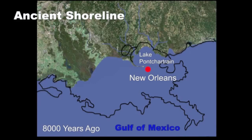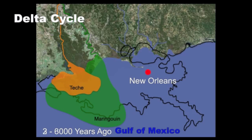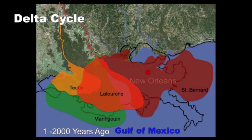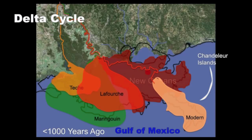Sea level rise then slowed and the river began building up sediments along the coast. Scientists call these deposits delta lobes. Additional delta lobes were formed as the river switched from east to west and back again. When the river switched to a new course, the abandoned lobe began to deteriorate, a process that caused the formation of barrier islands.